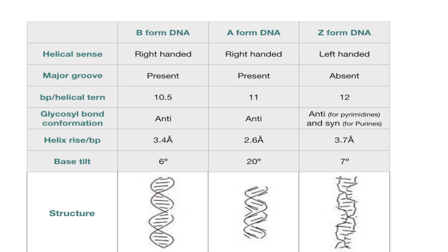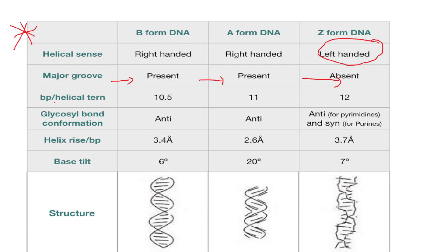There are different forms of DNA: B form, A form, and Z form. A form of DNA is right-handed; Z form of DNA is left-handed. In B form, a major groove is present. In A form, a major groove is also present. In Z form, the major groove is absent. Regarding bases per helical turn: B form has 10.5, A form has 11, and Z form has 12 base pairs per helical turn.